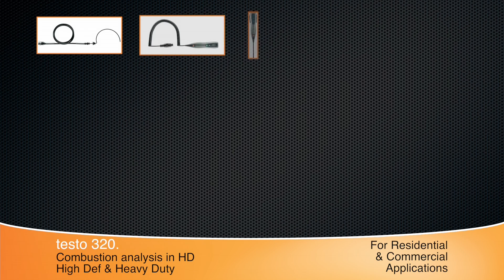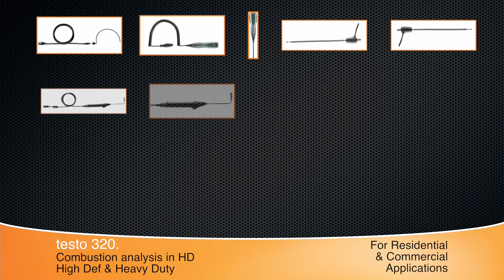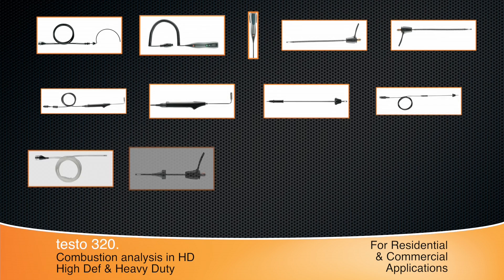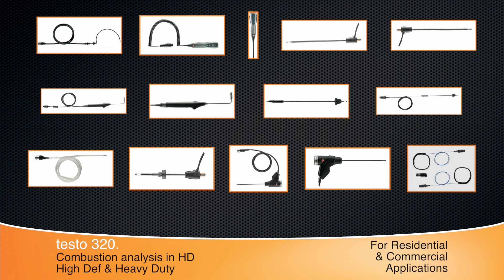The Testo 320 has a probe available for almost any measurement. For more job site testing, longer hose lengths and probes for gas leak, ambient carbon monoxide, and carbon dioxide measurements are available.